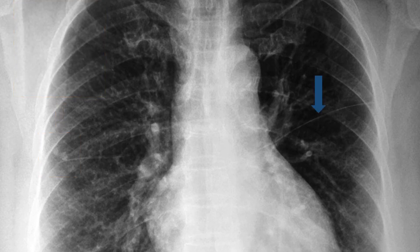The left horizontal or minor fissure is an accessory fissure found in around 8% of individuals examined with CT and 1.6% of individuals examined with chest x-ray. The left horizontal fissure separates the lingula from the rest of the left upper lobe.